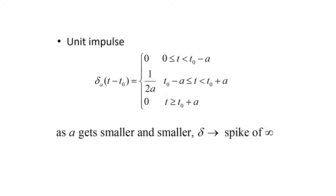As the value of a gets smaller and smaller, that means the denominator of 1 over 2a is going to get small, and that's going to force this function delta to go towards infinity.